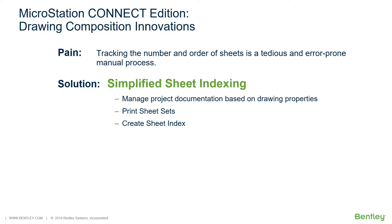Explorer seamlessly integrates with Print Organizer in a variety of ways to make it easy for you to print your project data. You can create a table for your sheet index by clicking the Place Table icon, which starts the Place Table tool to place the index sheet. An index sheet contains properties of all the sheets in the sheet index that is placed as a table. Once placed, a report definition of the index sheet is also created in the Reports dialog. As your project grows, any new sheets that are added to the index will dynamically update the sheet index table.